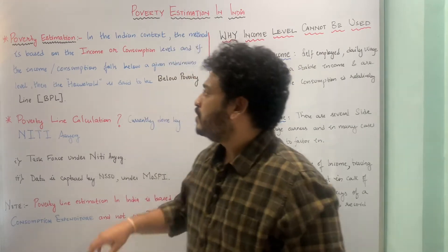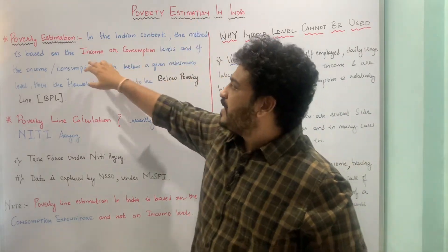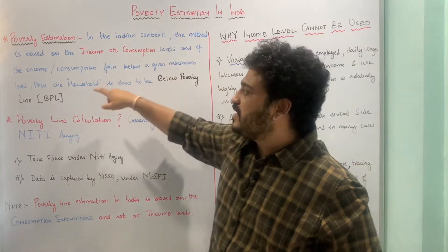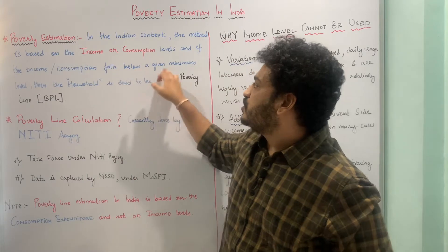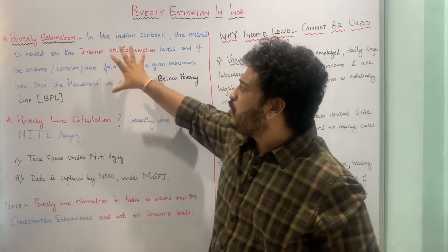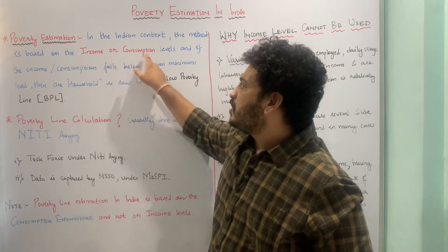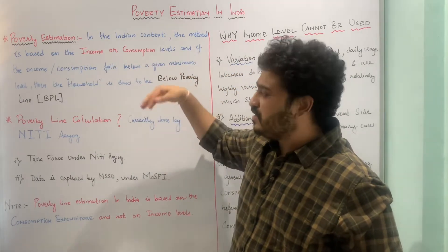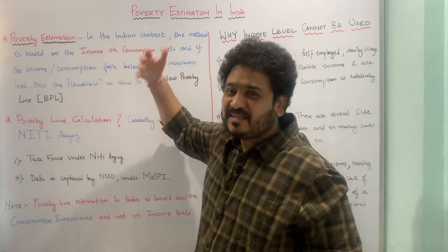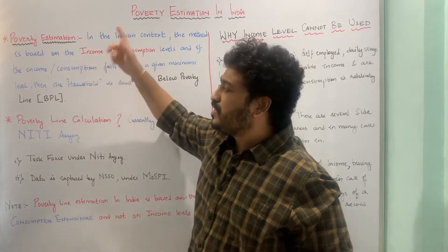Poverty estimation in the Indian context is done using a method based on income or consumption levels. If an individual or a household has an income or consumption level which falls below a given minimum level, then that household is said to be below the poverty line. In this lecture, you will see that we are using consumption rather than income to estimate poverty in the Indian context.